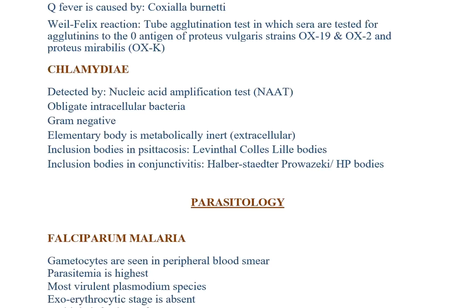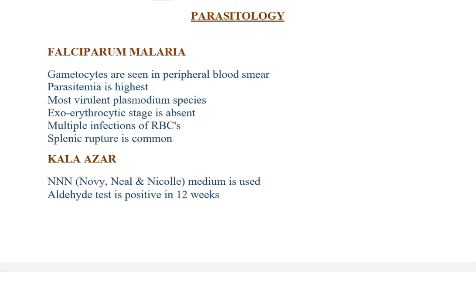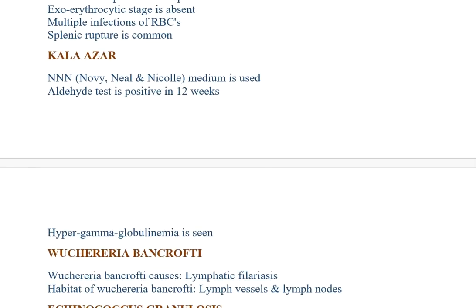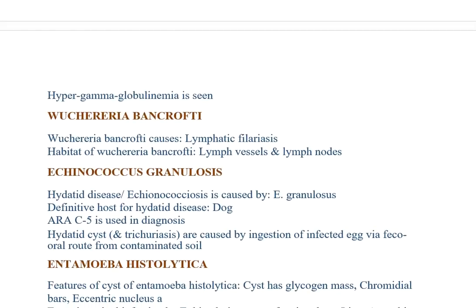Parasitology — Falciparum malaria: gametocytes seen in peripheral blood smear; parasitemia is highest; most virulent Plasmodium species; exo-erythrocytic stage absent; multiple infections of RBCs seen; splenic rupture is common. Kala-azar: NNN medium used; aldehyde test positive even at 12 weeks; hypergammaglobulinemia seen. Wuchereria bancrofti causes lymphatic filariasis; habitat is lymph vessels and lymph nodes. Echinococcus granulosus (dog tapeworm) causes hydatid disease; definitive host is dog; ARC5 used in diagnosis. Trichuriasis caused by ingestion of infected egg via feco-oral route from contaminated soil.